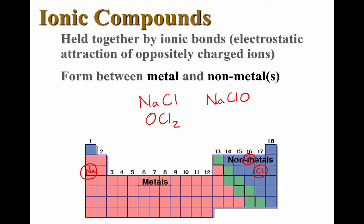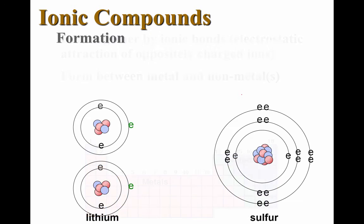So what about this compound? Sodium hypochlorite or bleach. Would this be an ionic compound or a covalent compound? Well, because it has a metal and nonmetals, that makes it ionic. Even though this has three different elements in it, as long as there's a metal combined with nonmetal or more than one nonmetal, we're going to use this to predict it's an ionic compound.